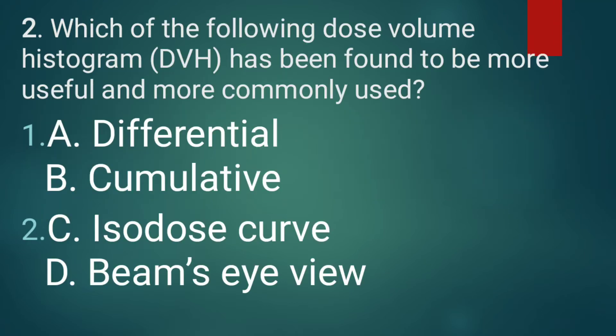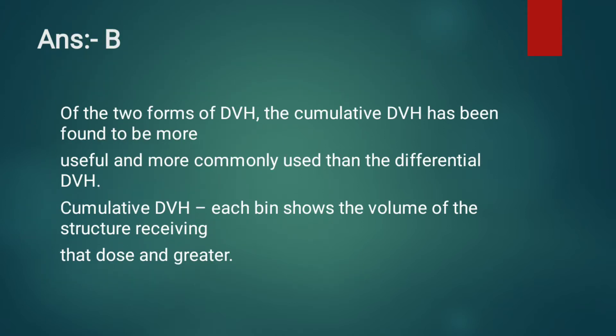Question 2: Which of the following dose-volume histograms has been found to be more useful and more commonly used? The correct answer is option B, cumulative DVH. Of the two forms of DVH, the cumulative DVH has been found to be more useful and more commonly used than the differential DVH.